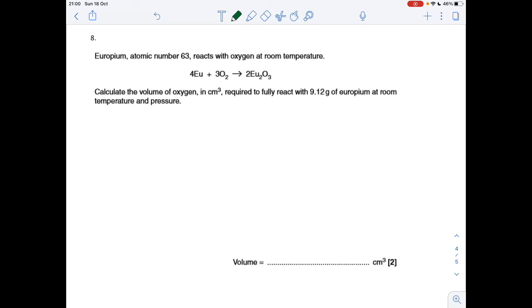And the final question, another reactant volume at RTP question, and again, it wants it in cm cubed. None of the questions on this have asked for the volume to be in decimetres cubed. So we've got 9.12 grams of europium, so moles of europium first of all. Mass over MR, 9.12 divided by 152, that's 0.06 moles.